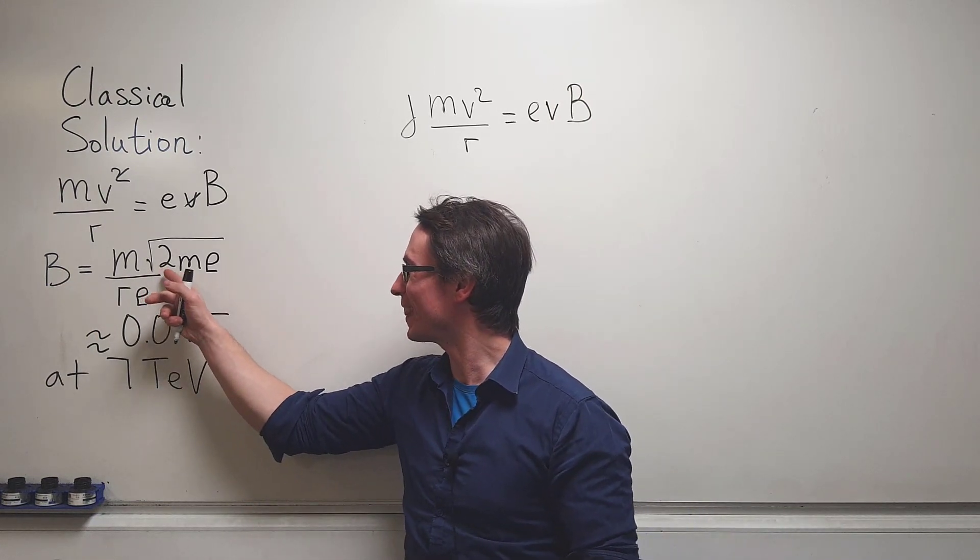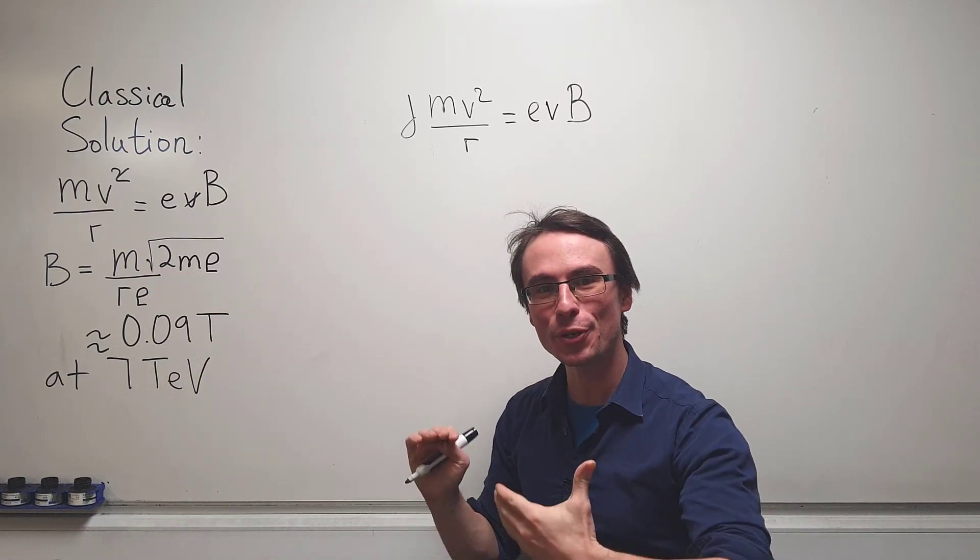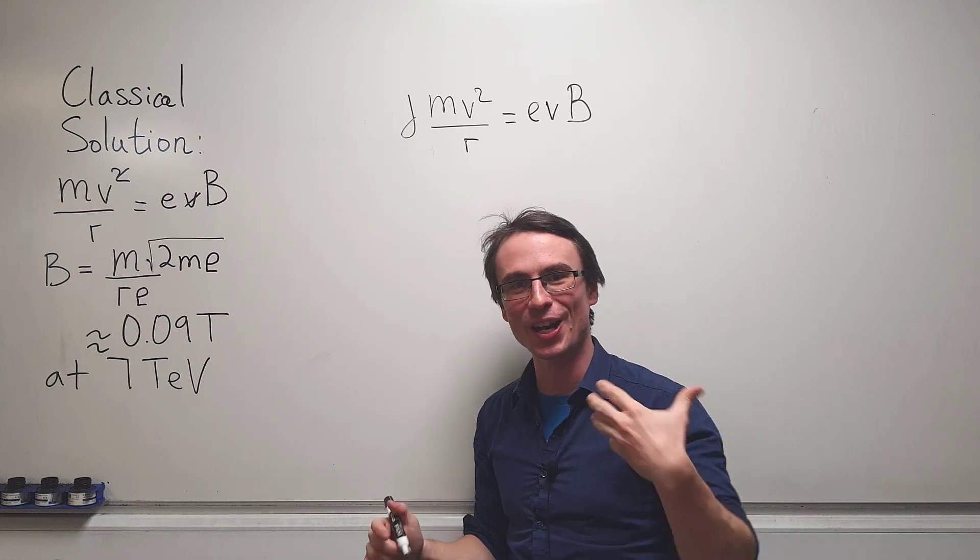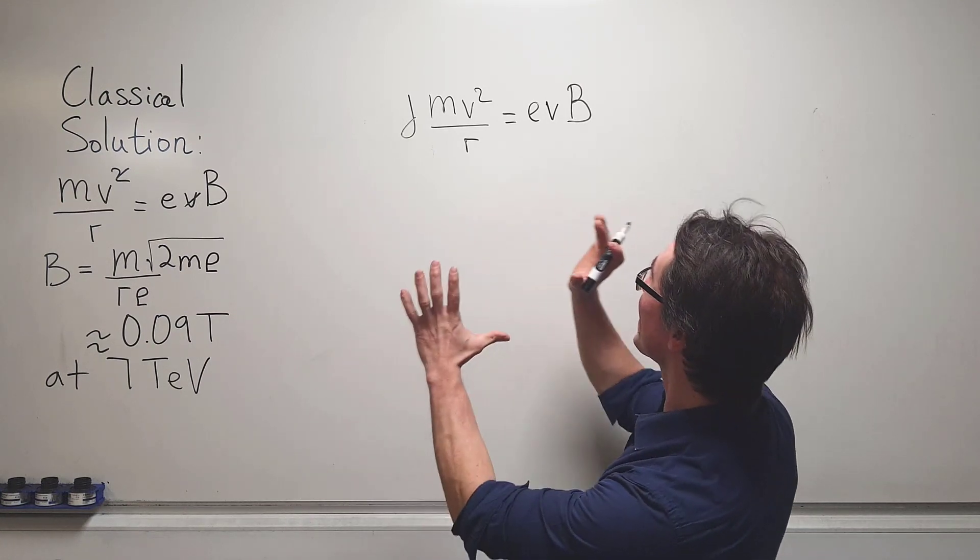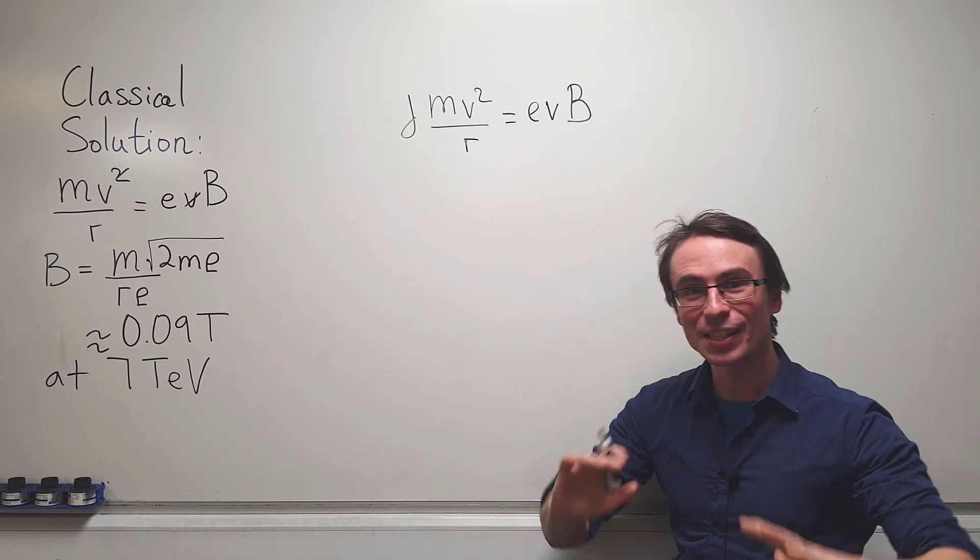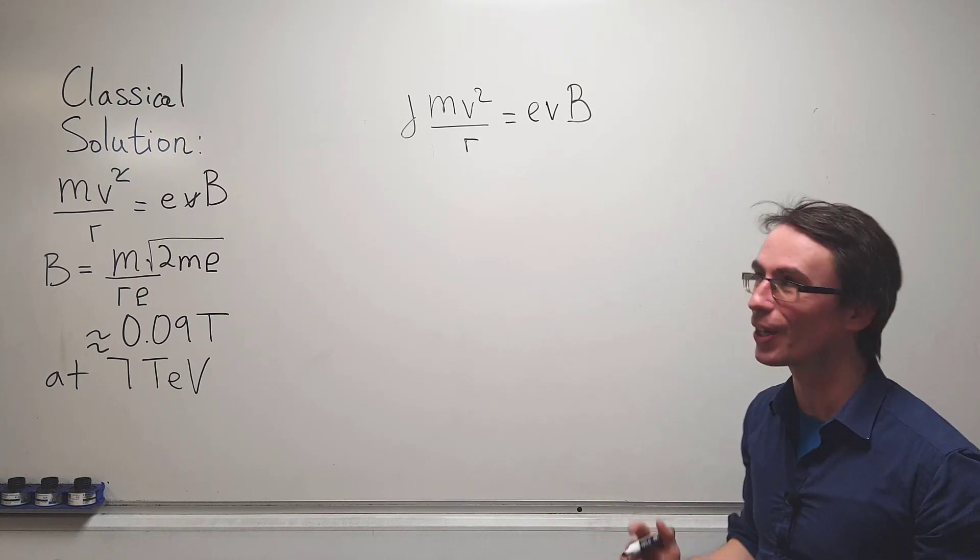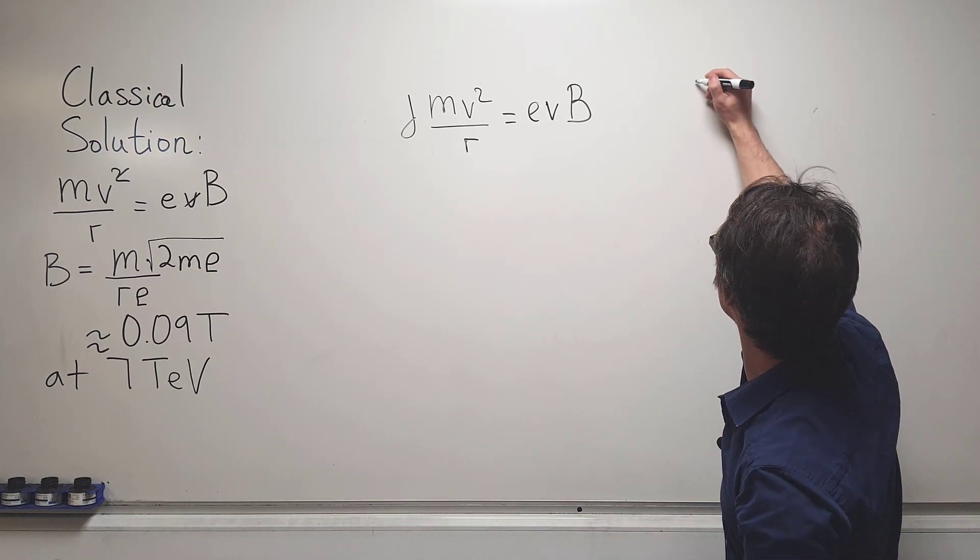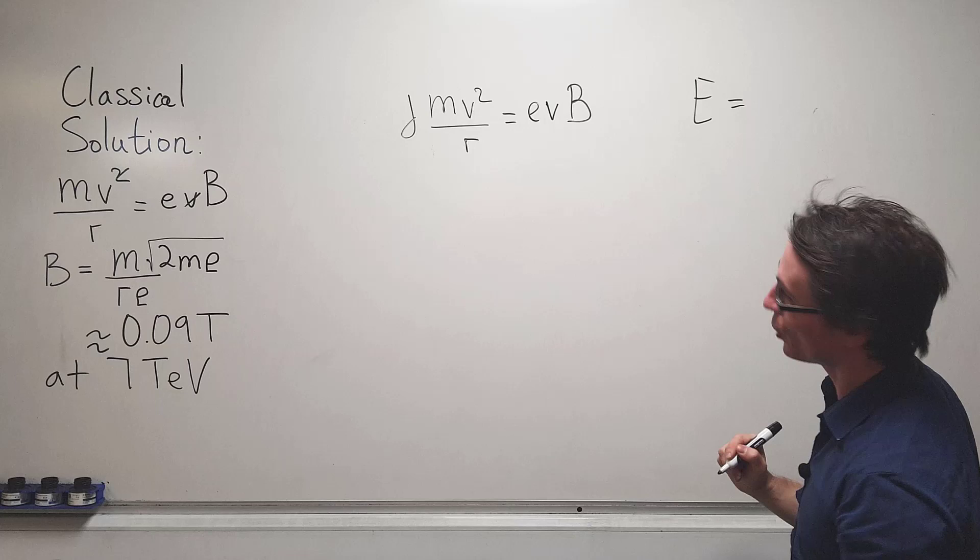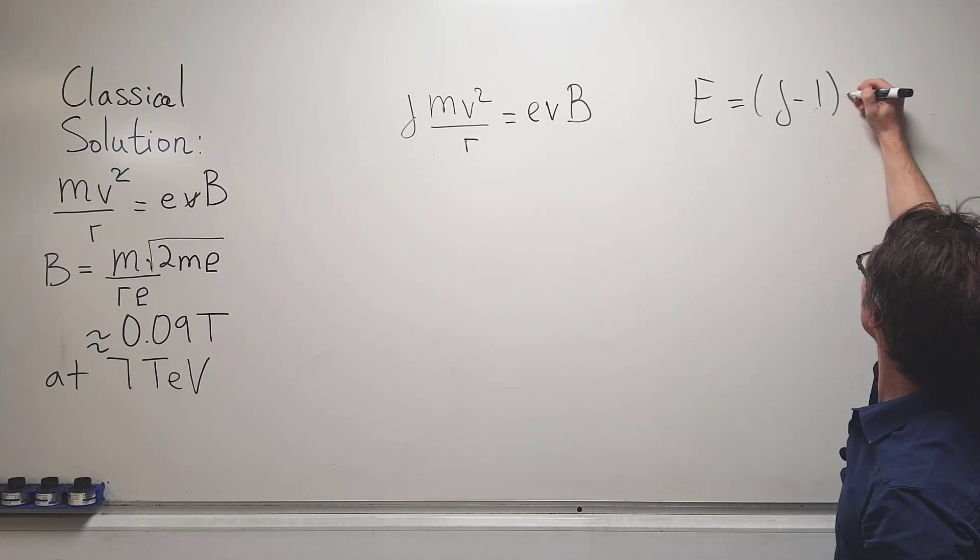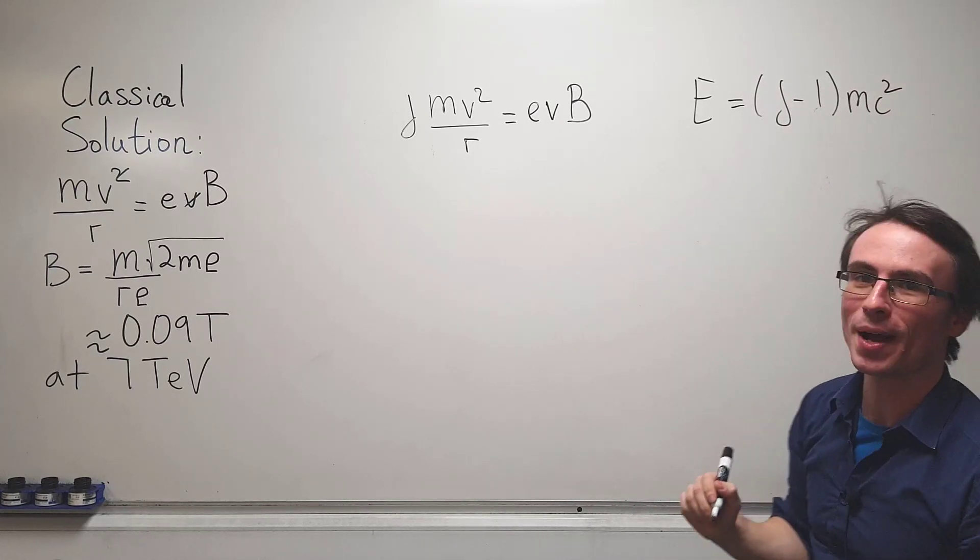In the classical solution to get this for the speed, we have used the kinetic energy equation a half mv squared. But in our relativistic case we cannot use that equation, and we need to use the fact that the kinetic energy is going to equal gamma minus 1 mc squared.